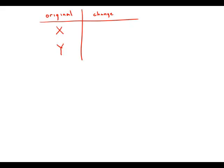The price per share of stock X increased by 10% over the same time period that the price per share of stock Y decreased by 10%.